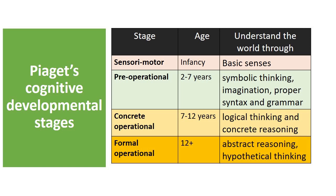The third stage, the concrete operational stage, lasts from age seven to age twelve. In this stage, children develop logical thinking and concrete reasoning relevant to time, space, and quantity. It's only at the formal operational stage that humans start to understand abstract concepts and hypothetical situations.